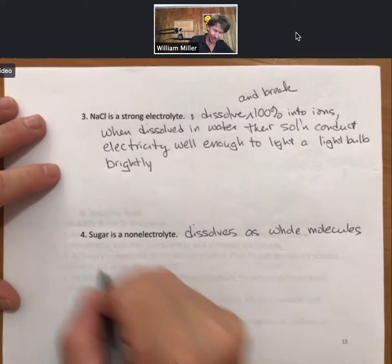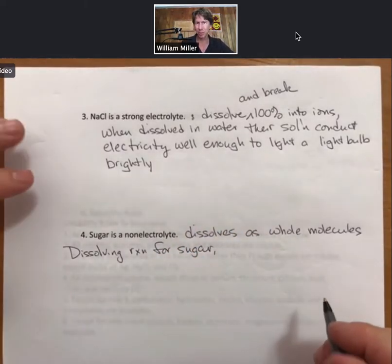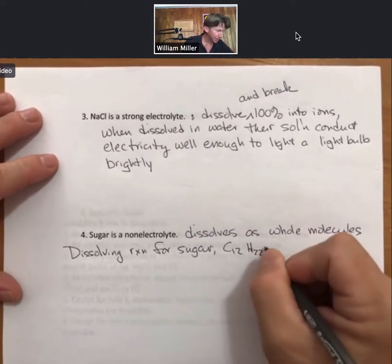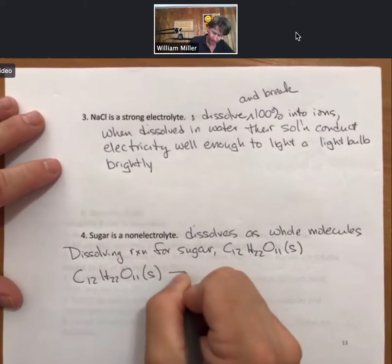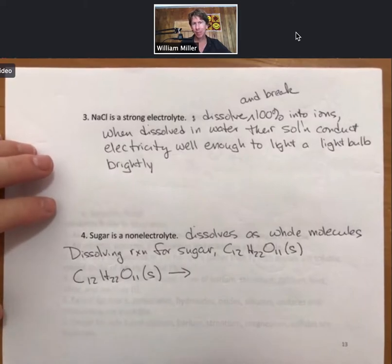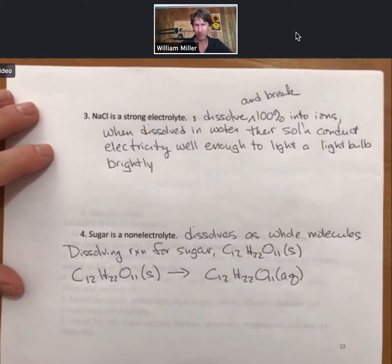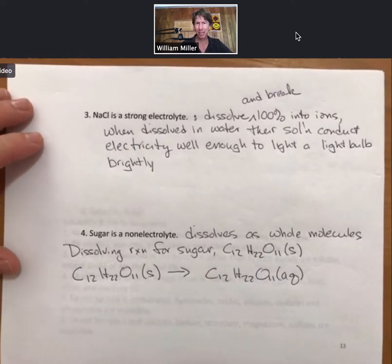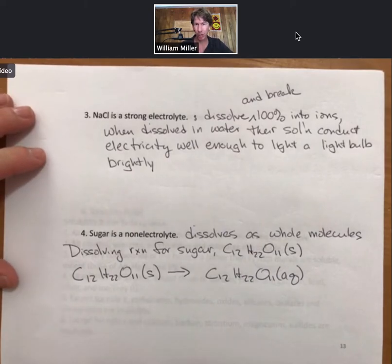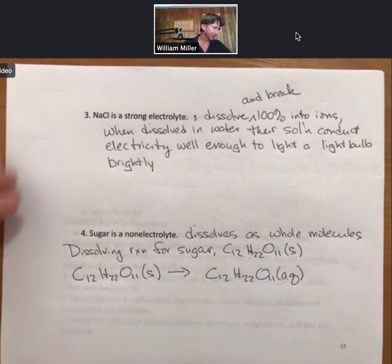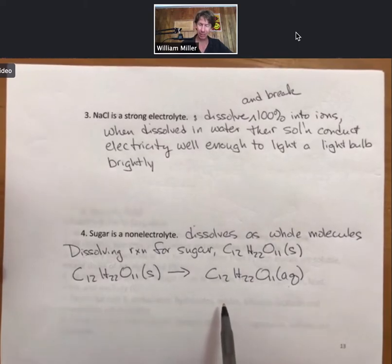So if I were to write a dissolving reaction for sugar, and we'll go with table sugar, C12H22O11, it would have the solid phase as a reactant, and on the product side it would have an aqueous species, but the aqueous species is just whole molecules. So yes, it dissolves. Yes, it becomes aqueous. Yes, it has a hydration shell that is much more complicated, but the same idea as for the sodium or chloride ions. There are water molecules surrounding this in a hydration shell. So it is aqueous, no ions, no conducting electricity. The light bulb does not go on, but it does dissolve.